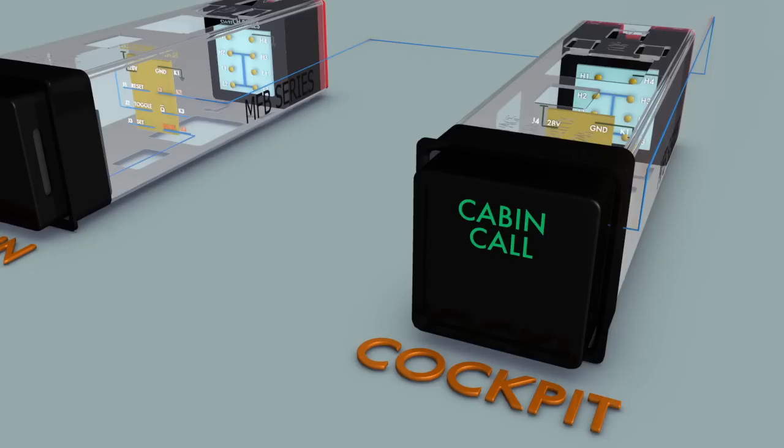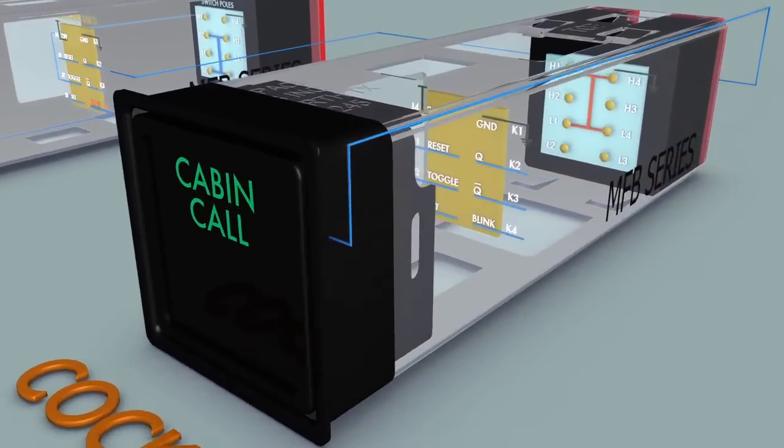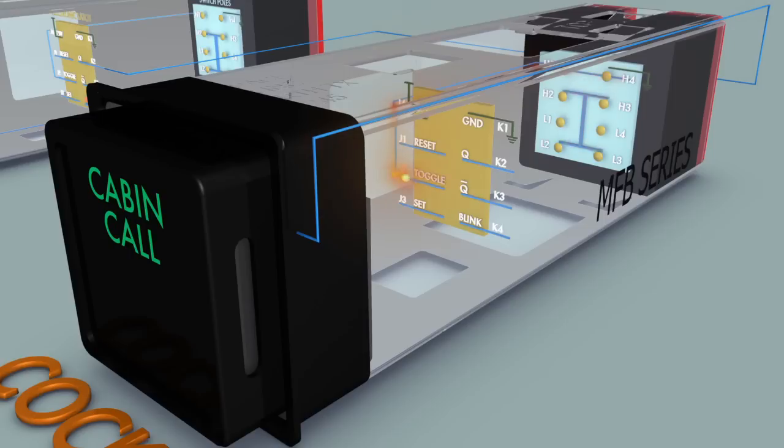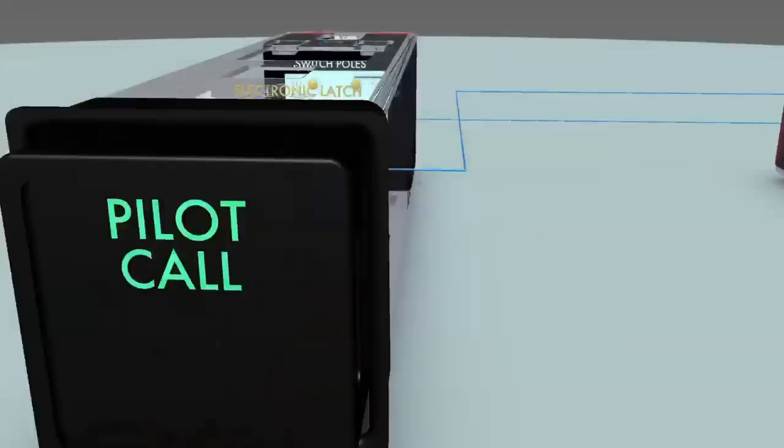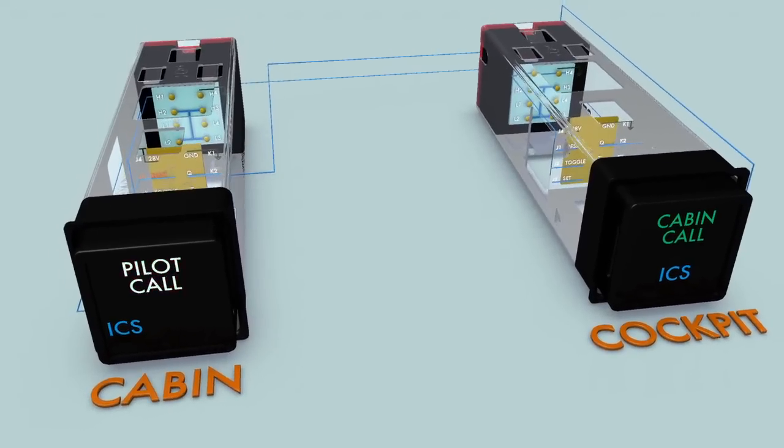Each of these outputs is activated by the toggle input. When the pilot selects the cabin call switch to answer the call, the ICS channel is activated and the ICS legends in the cabin and in the cockpit illuminate.